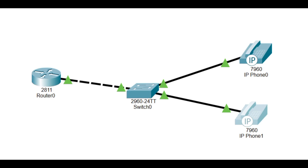Hello everyone and welcome back to my channel. Today we are going to create IP telephony and connect two telephones over Voice over IP. We are going to assign them IP addresses and give them extensions so that these two telephones, as shown in this topology, can communicate with each other. It's a simple topology that consists of a router, a switch, and two IP phones.